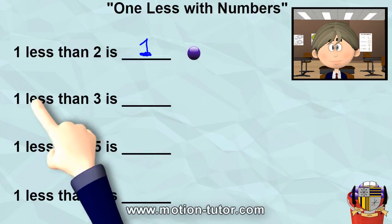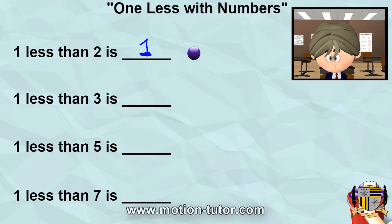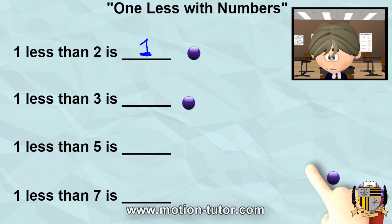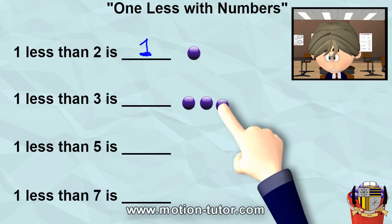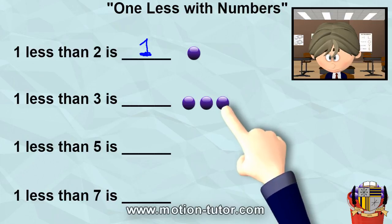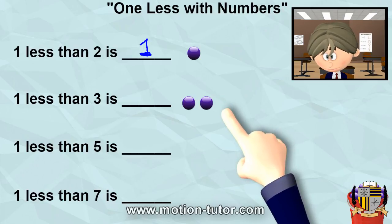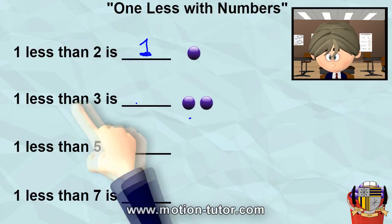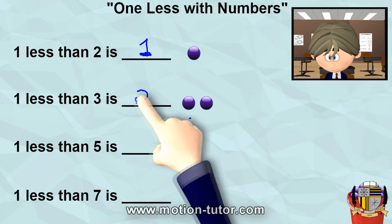Alright, let's look at this. One less than three is... one less than three, so we're going to have three and look at one less than it. Here's three, so one less than three — how would it look? It will look like this. It will be two. So that means one less than three is two.